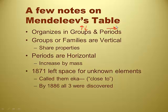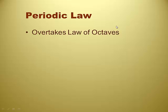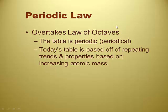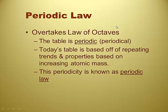The really neat thing for Mendeleev is that only 15 years later — and he was still alive — those three elements were discovered. And the properties that he predicted they would have were correct. How useful of a tool is this table that is periodic that Mendeleev created? It's extremely useful. Periodic Law overtakes the Law of Octaves. Today's table is based off of repeating trends and properties based on increasing atomic mass — that sounds like a definition. It's a law — the Periodic Law definition. And this periodicity is known as Periodic Law.